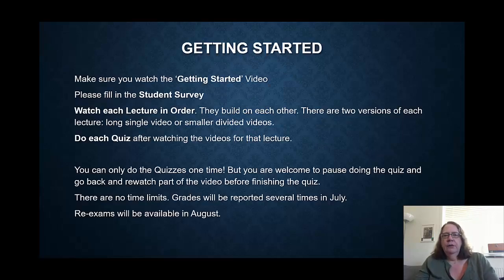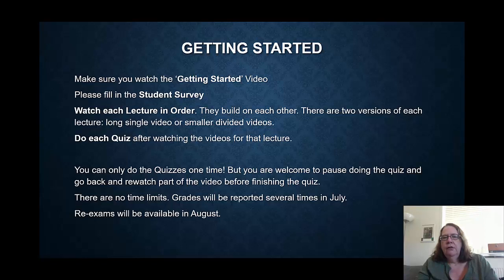To make sure it's clear how to get going: make sure you've watched the Getting Started video. Please fill in the student survey. And then watch each lecture in order — they build on each other. There are two versions of each lecture: one long single video, or smaller divided ones. It doesn't matter which you watch. You should do each quiz after watching the videos. You can only do the quizzes once, but you're welcome to pause during the quiz and go back and re-watch the video before finishing. There are no time limits, but grades will be reported several times during July, and I put the dates on the website. Re-exams will be available in August.